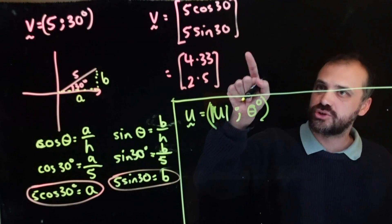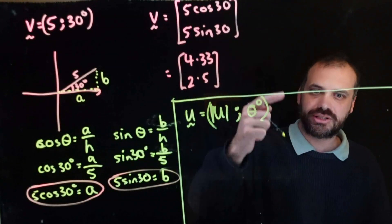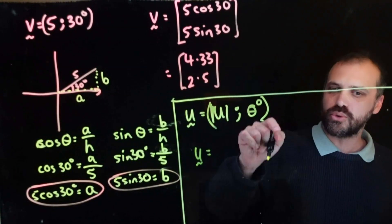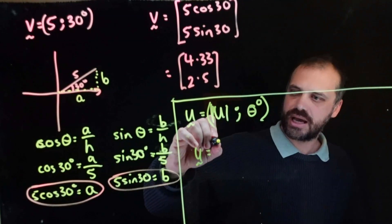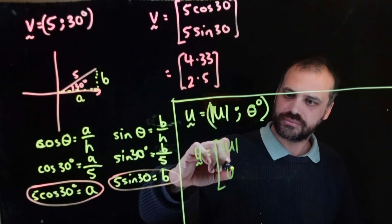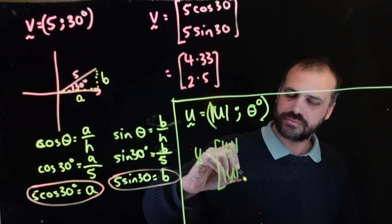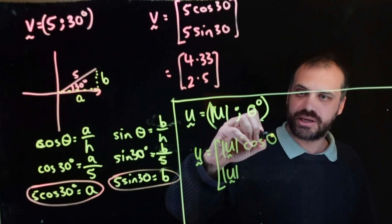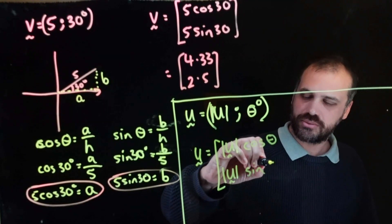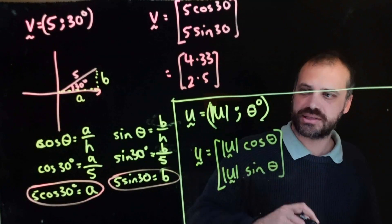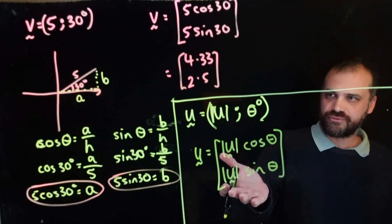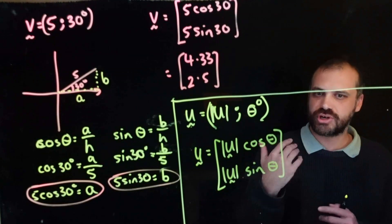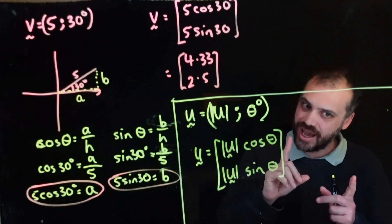We can convert that to component form using essentially this formula. We can say that vector u, therefore, will always be equal to the magnitude of itself cos whatever angle it happens to make with the x-axis, sine whatever angle it happens to make with the x-axis. And using that formula, we can just convert things in a second. Straightforward. We don't have to draw a bunch of triangles.